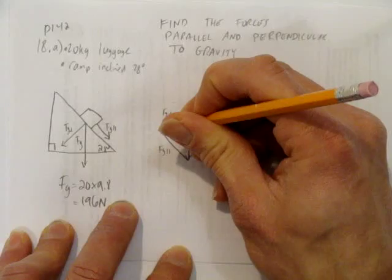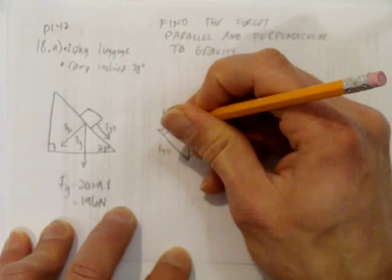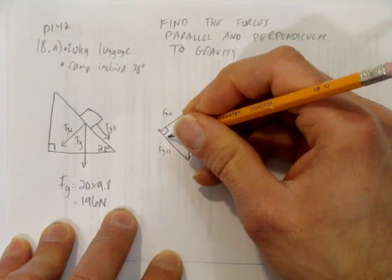This is a 90 degree angle because a perpendicular and parallel, they're 90 degrees to each other.